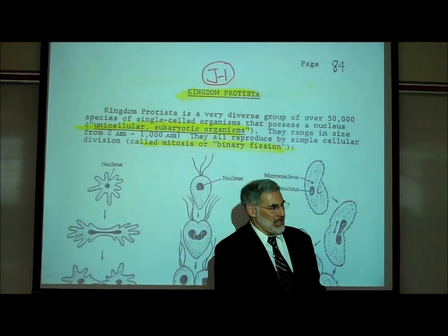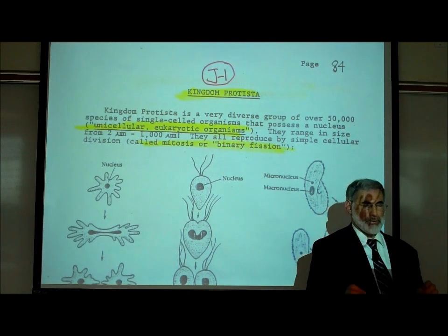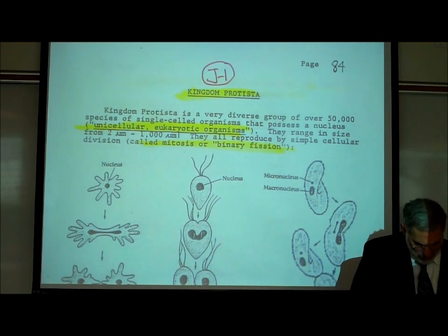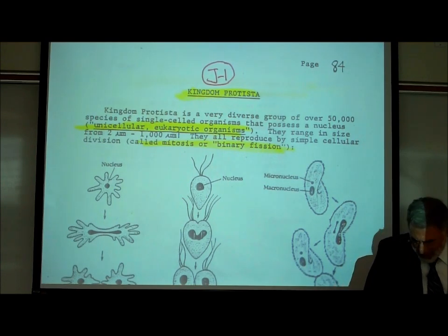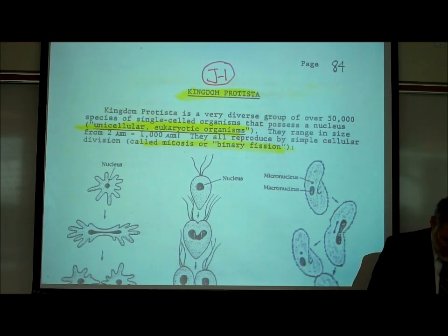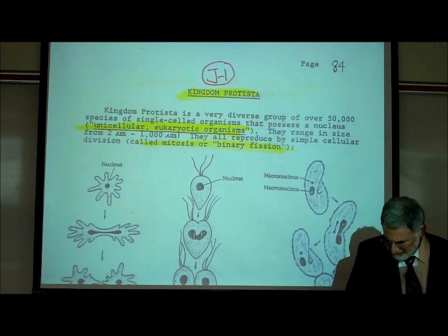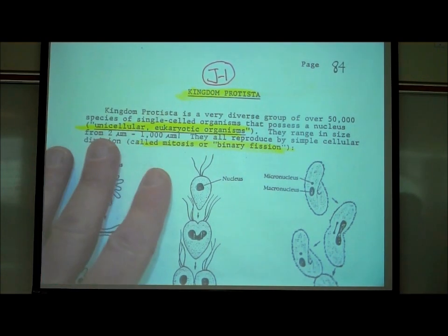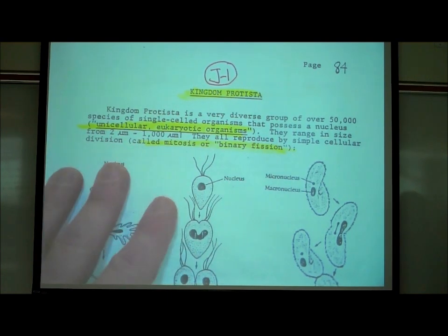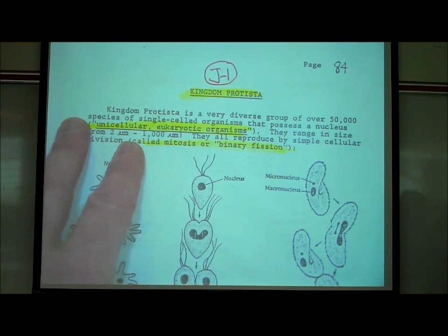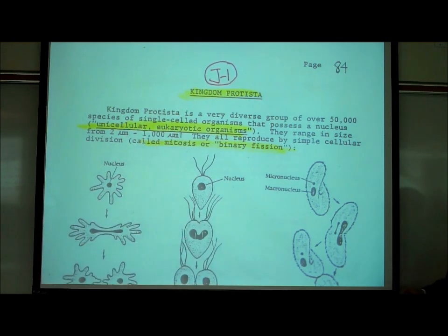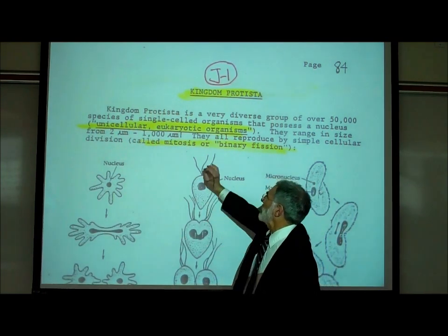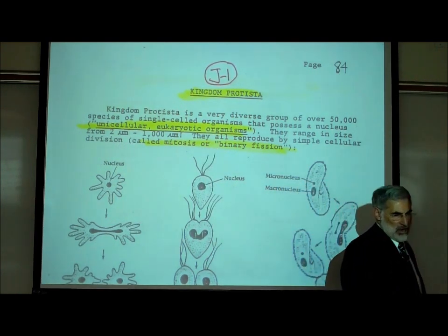We're now going to examine Kingdom Protista. How would we define the members of Kingdom Protista? There are over 50,000 species of them, and they are all unicellular, meaning single-celled organisms. But unlike Kingdom Monera, all of these organisms possess a nucleus — they are eukaryotes.